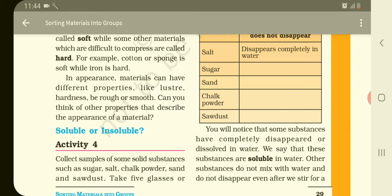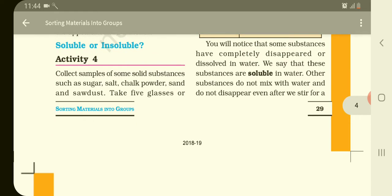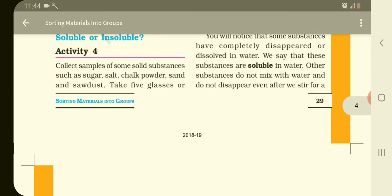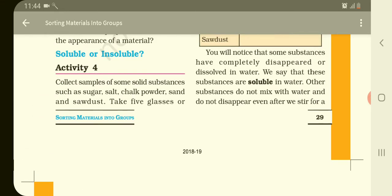For example, cotton is soft but iron is hard. Materials also have different properties such as luster, hardness, rough and smooth. You can think about other properties and describe them by the appearance of materials. Soluble and Insoluble.